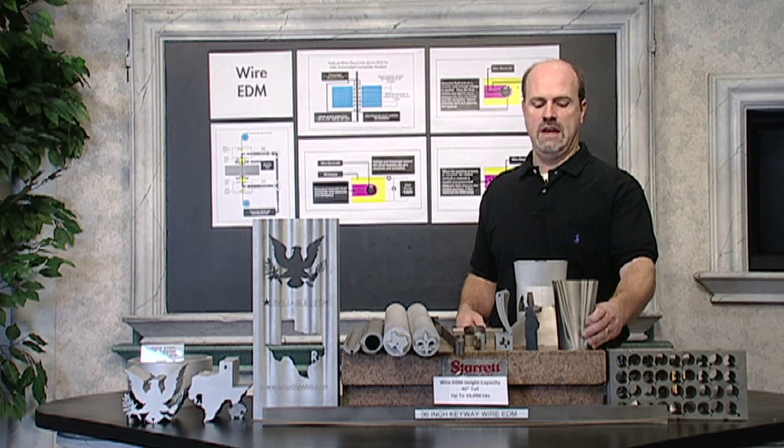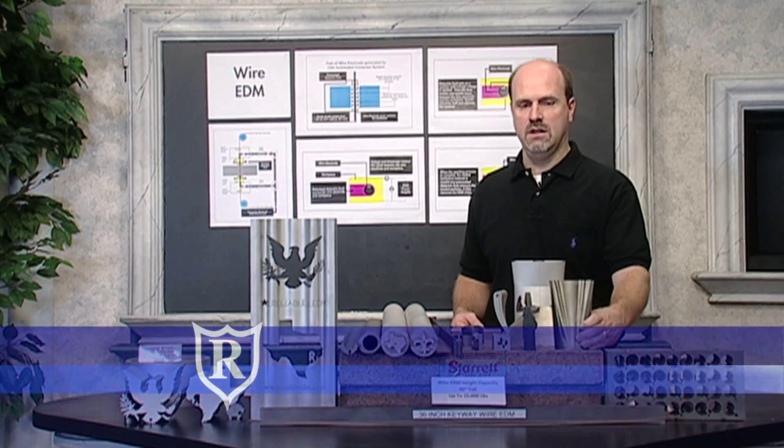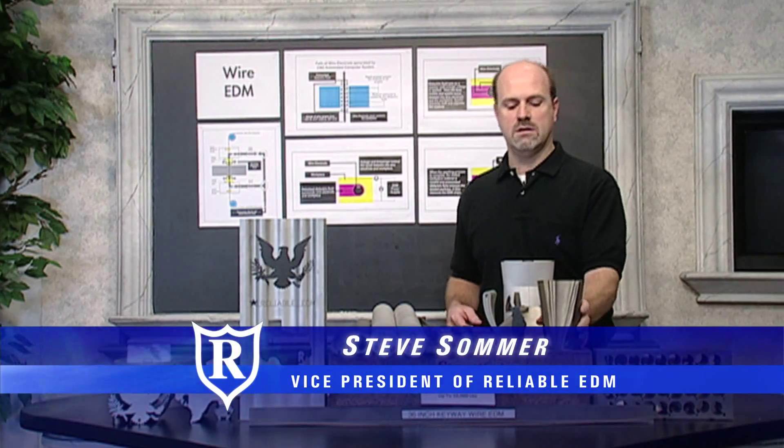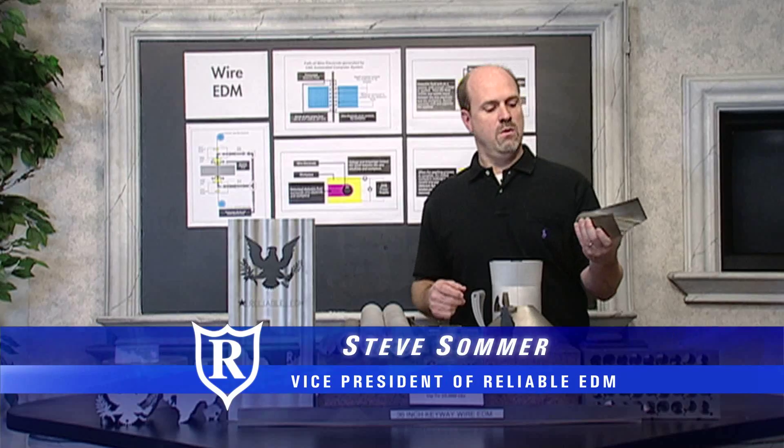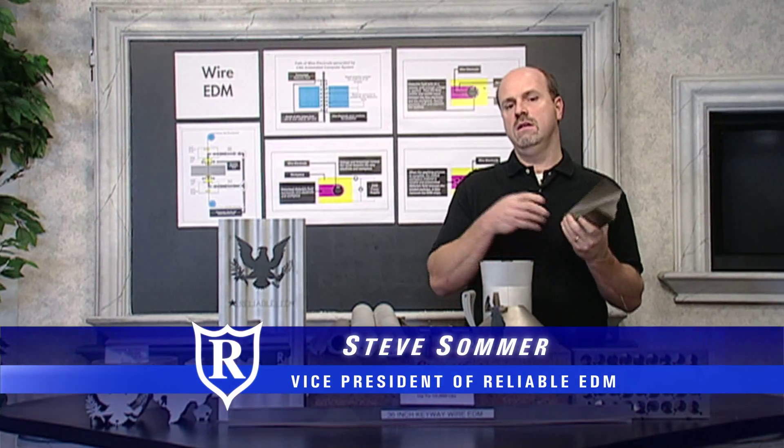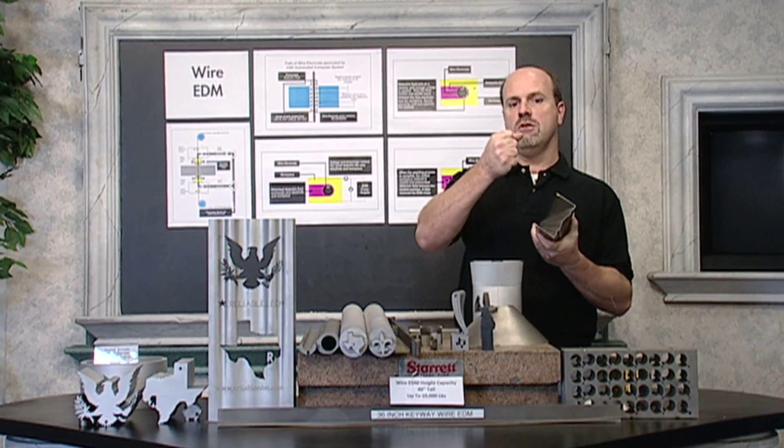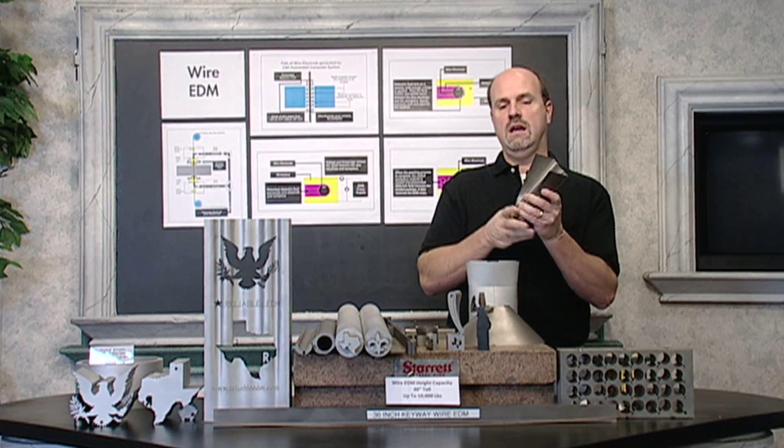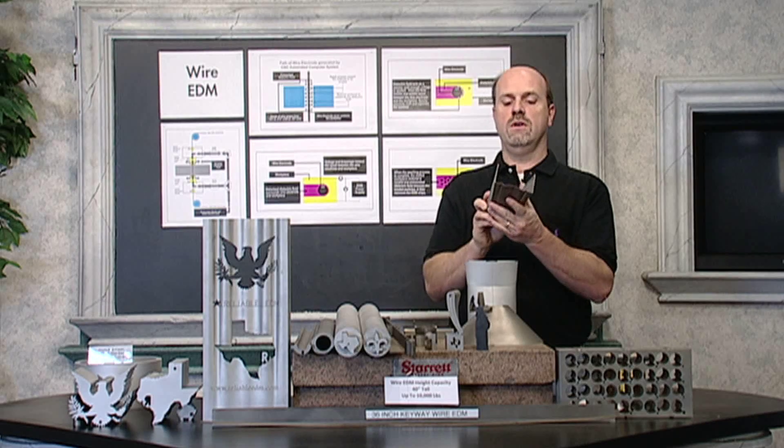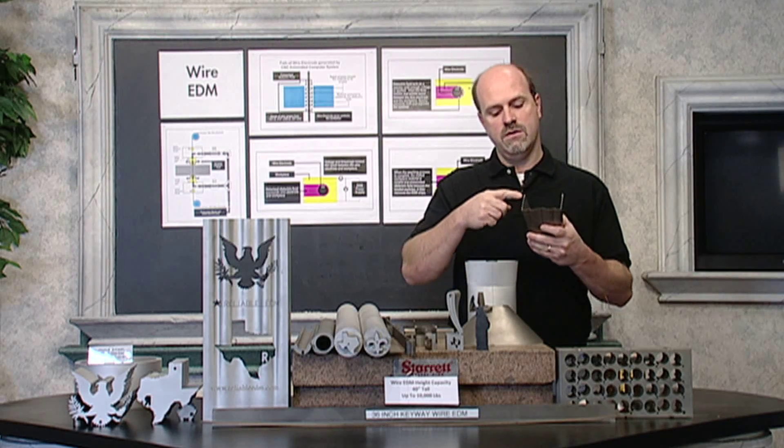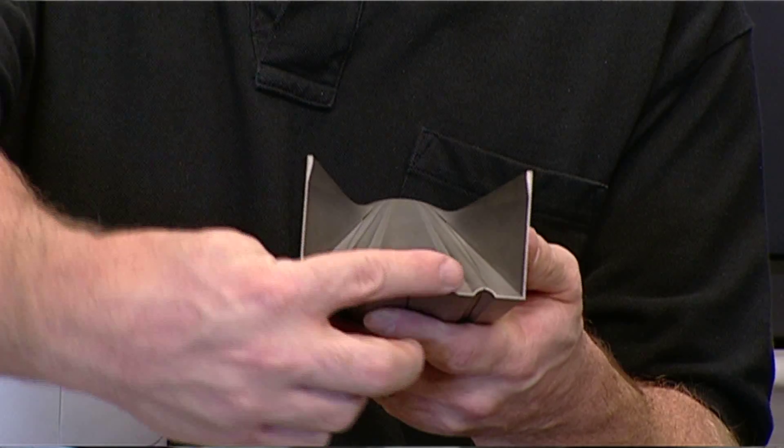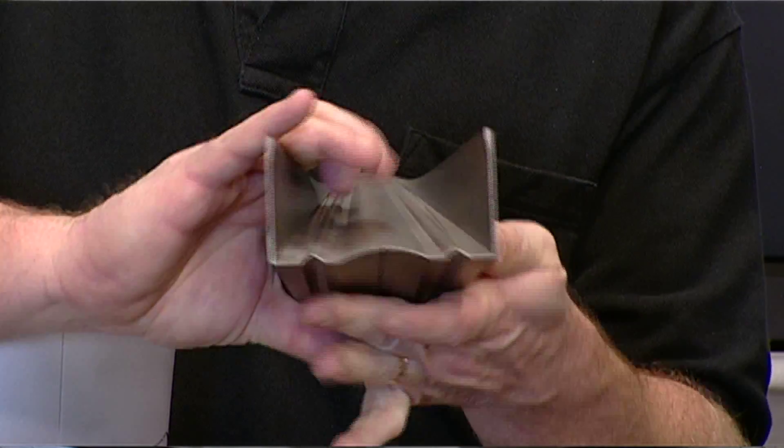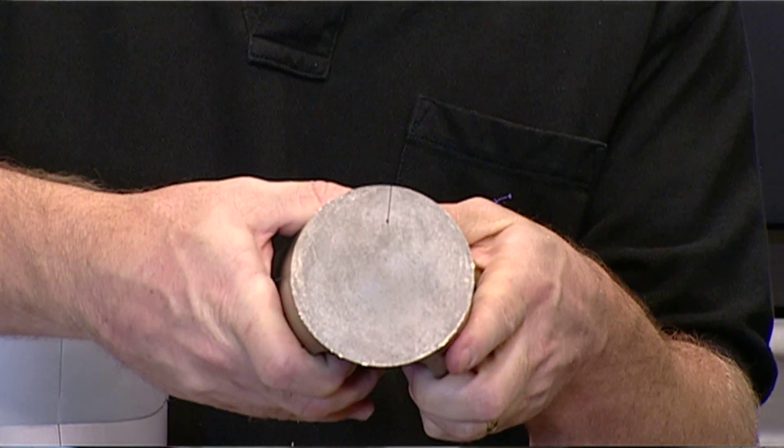One of the advantages of wire EDMing is the ability to create tapered parts. And how we do that is the upper head of a wire EDM machine, you can program it to move independently from the bottom head. And so by doing so, you can program this U-shaped extrusion die, and it transformed into just a diameter.